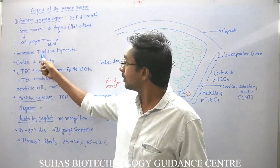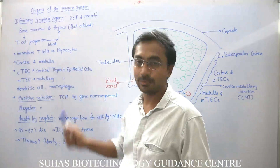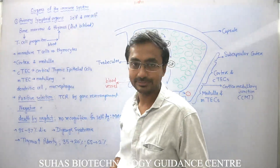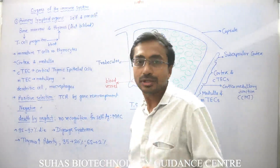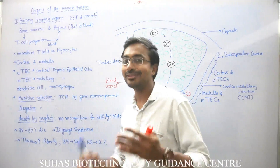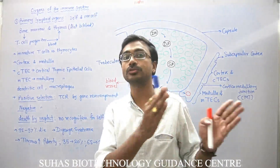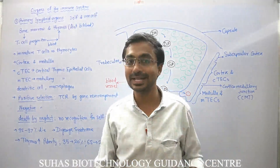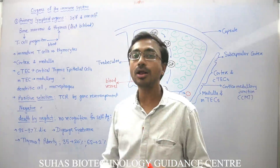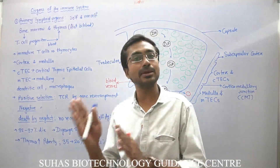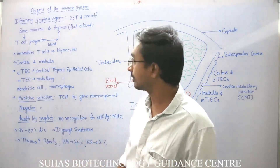Immature T-lymphocytes are also called Thymocytes, but when they are matured they will either get converted into cytotoxic T-lymphocytes — that is T-C — or helper lymphocytes — that is T-H.